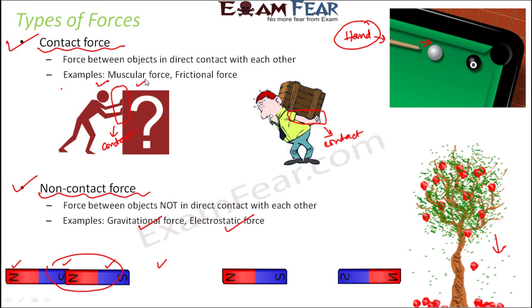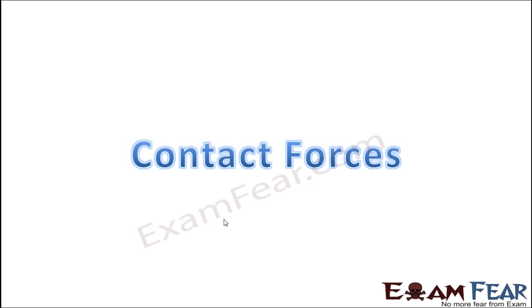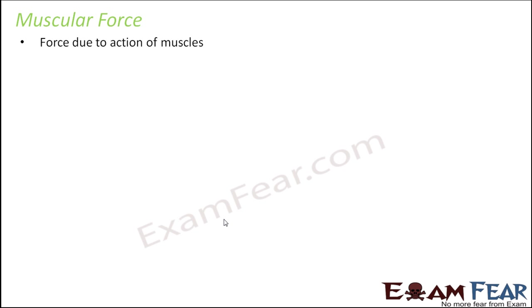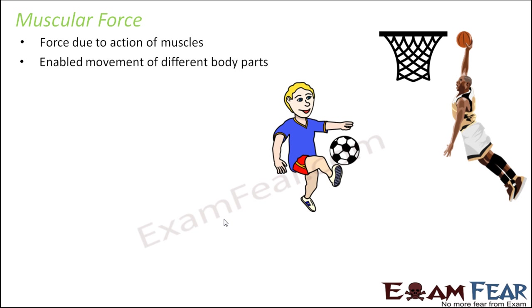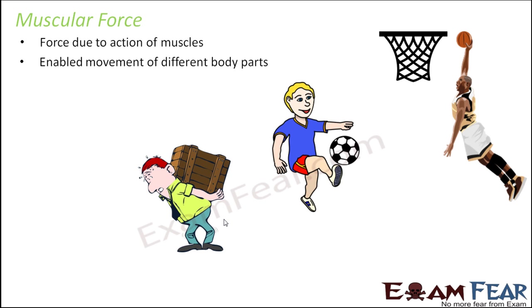In this chapter we will talk about four forces: muscular, frictional, gravitational, and electrostatic. The first contact force is muscular force — it is the force due to the action of muscles. All movement in our body, like moving our hands and legs, happens due to the activity of muscles. This force enables movement of different body parts. For example, while playing football or basketball you need to move your limbs — all these movements occur due to your muscles.